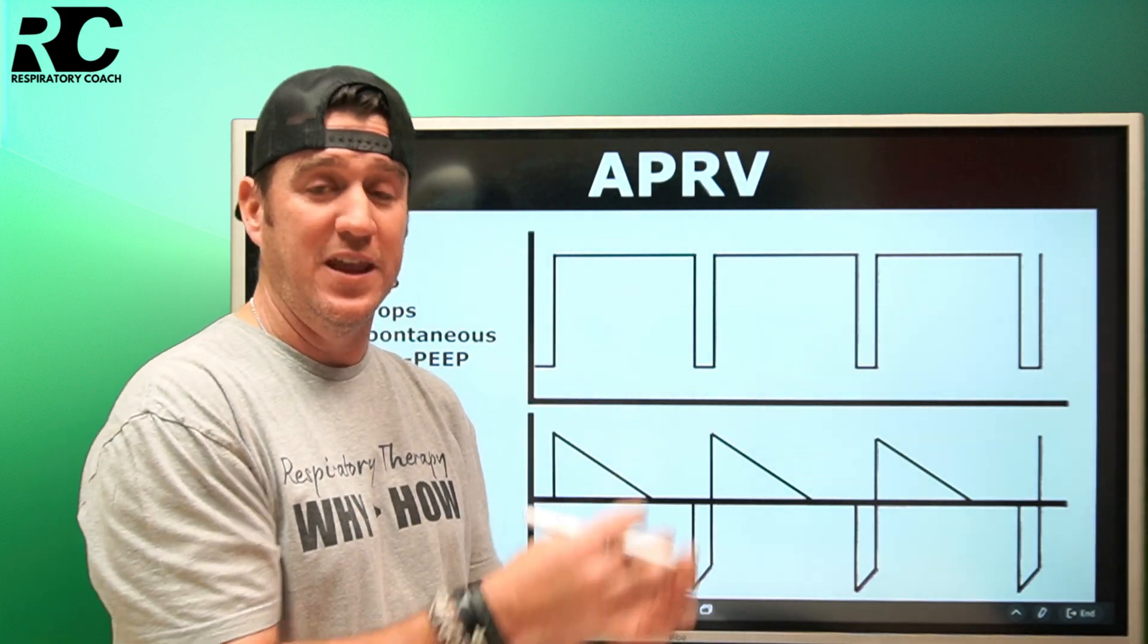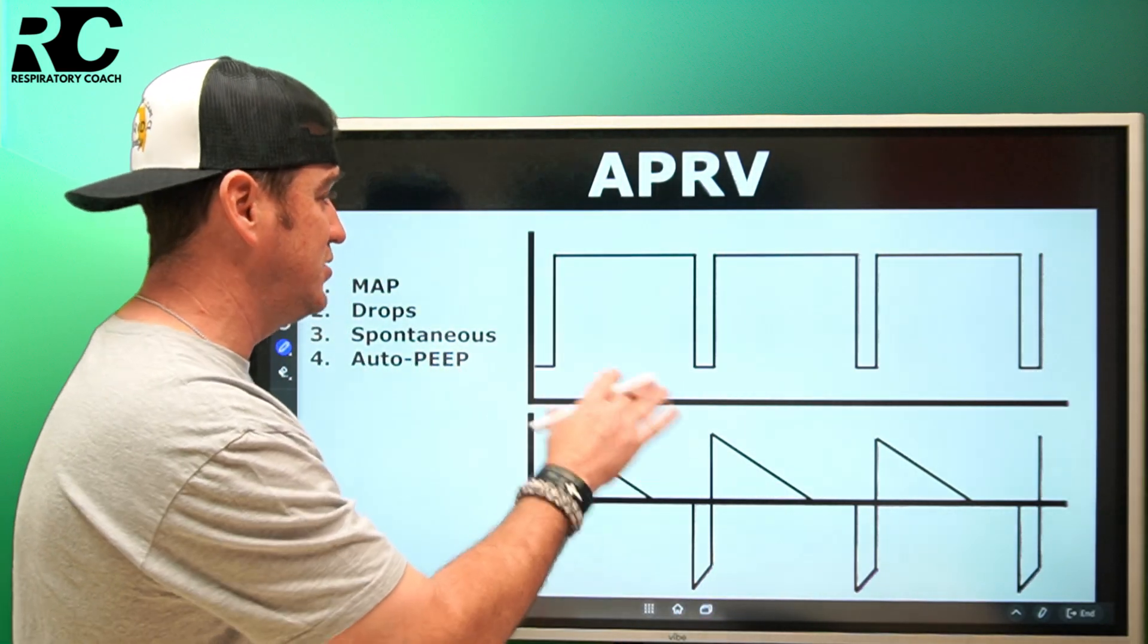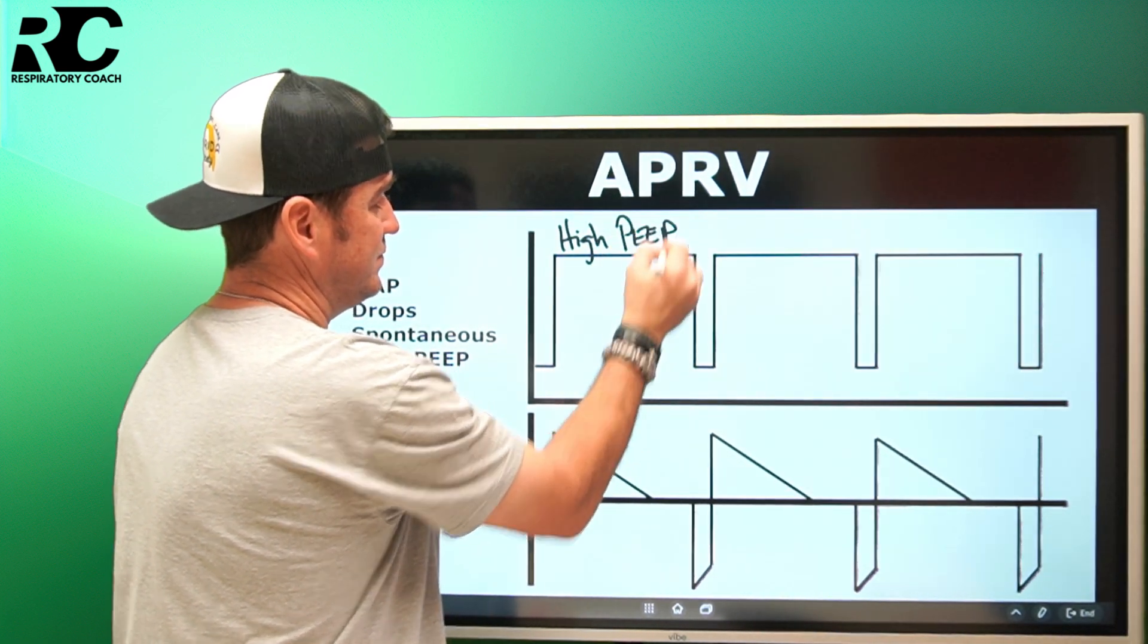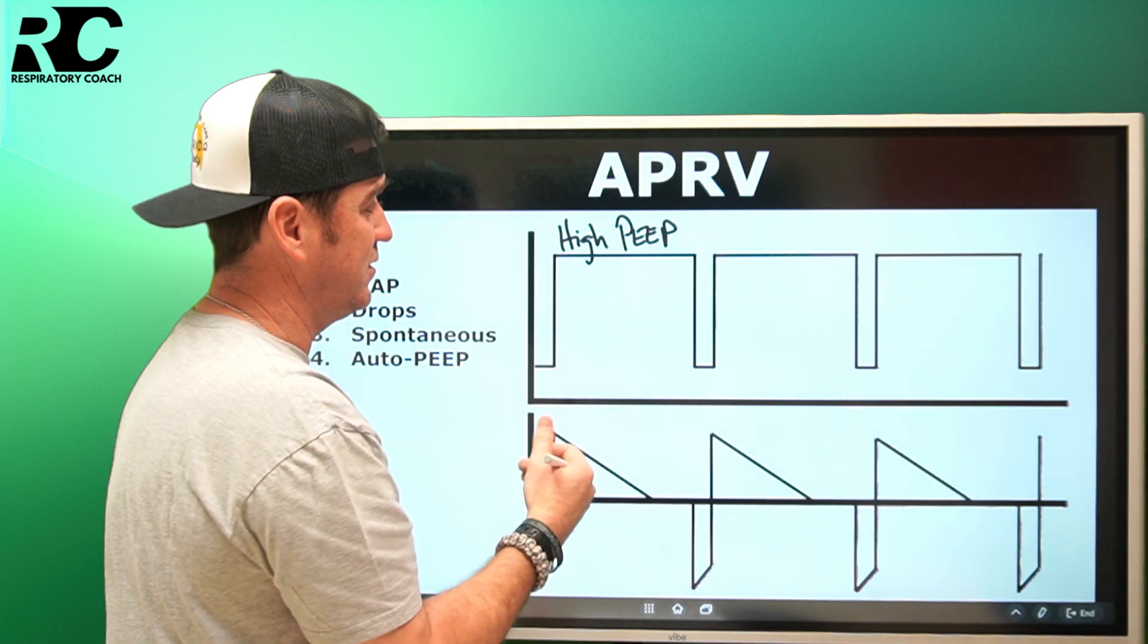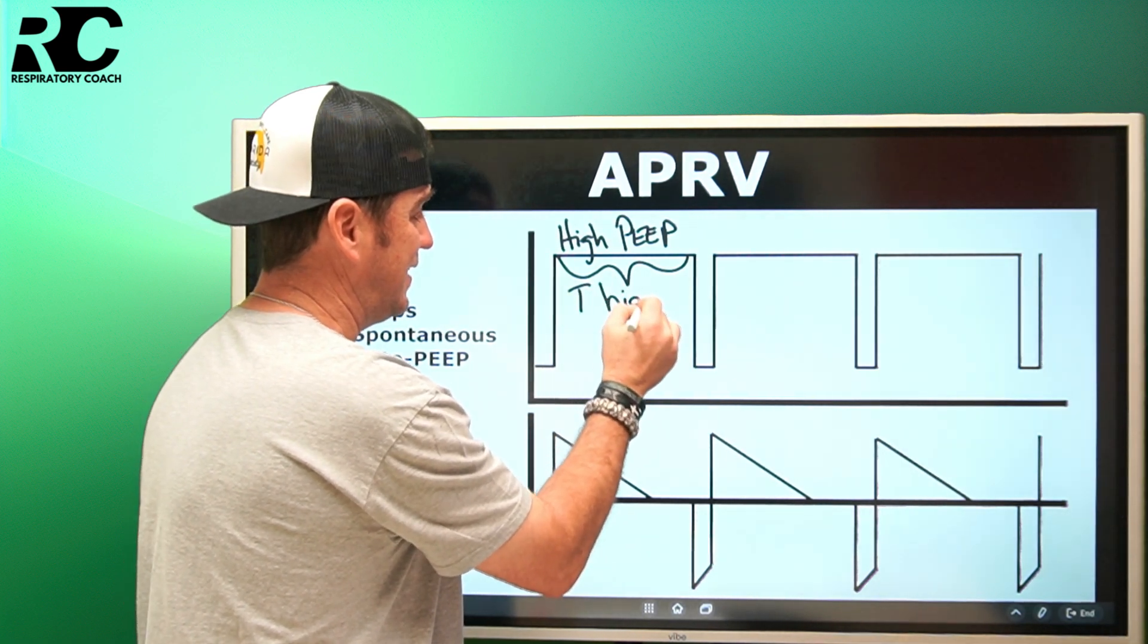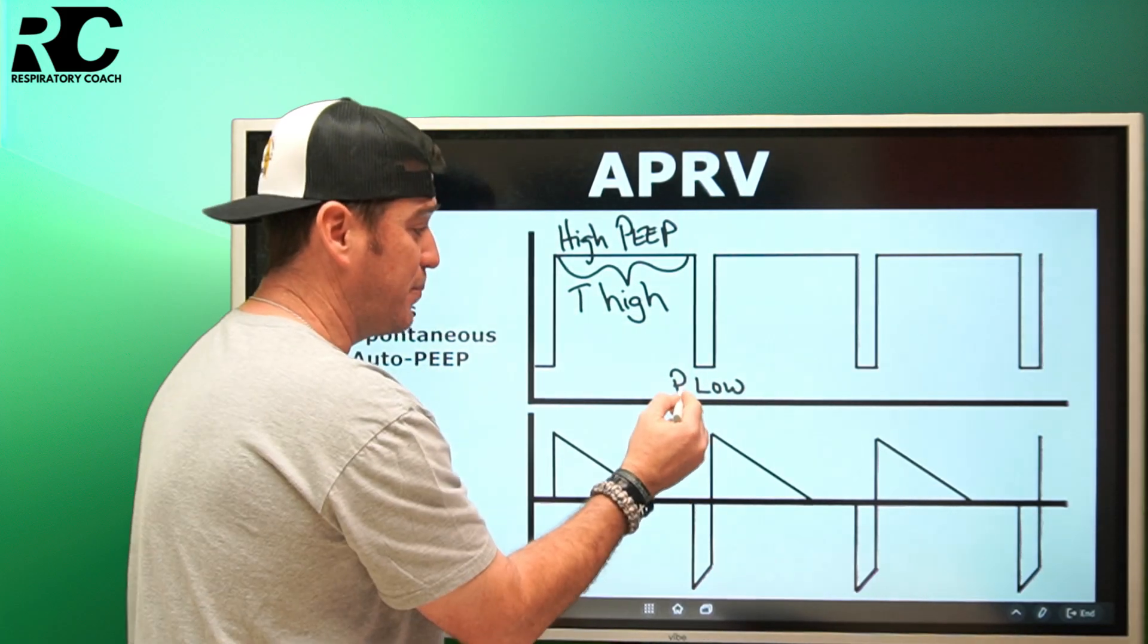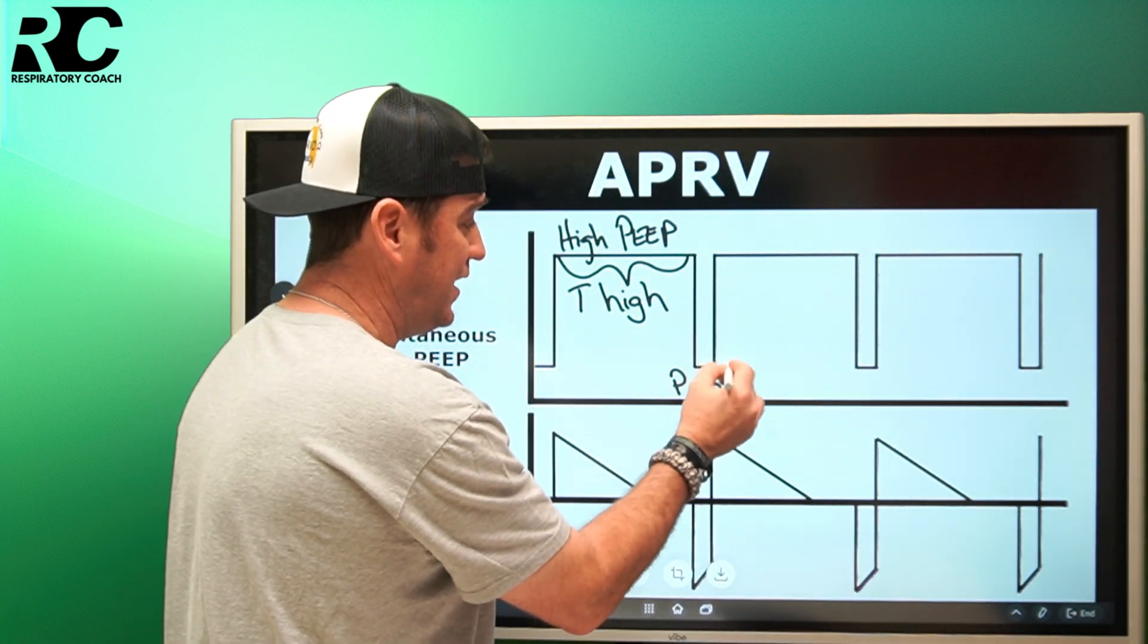If we were to label those up here, we would see that this point right here is our high PEEP level or high CPAP or high pressure. We hold it for an amount of time, so this is your time high - how long are we going to hold at that high PEEP level. Then we drop down here to P-low, which is pressure low or PEEP low or CPAP low. Then we hold that little hold right there, which is time low.